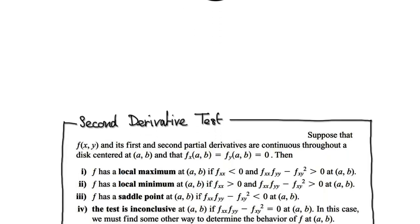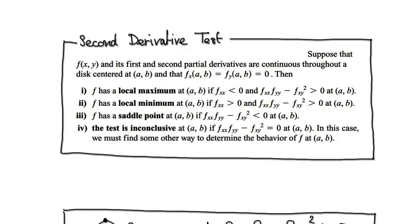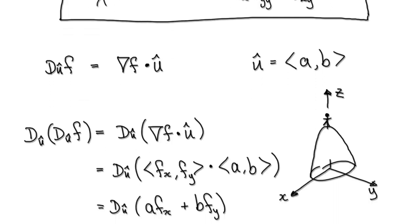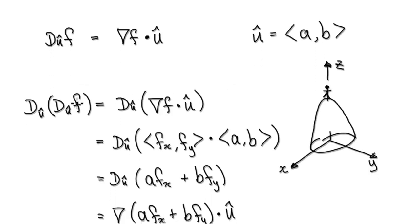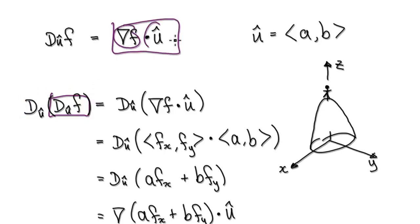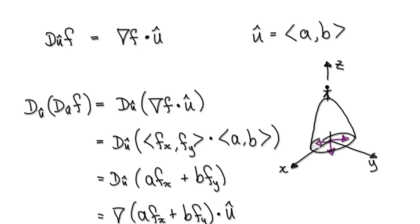Following on from our previous video, to understand the second derivative test, we will need to look at the directional derivative of a directional derivative. So we need to compute this block here — the directional derivative of a directional derivative. Remember from some of the earlier videos, the directional derivative is given by this — you need to take the dot product of two vectors, and you can head in any direction you want by specifying the unit vector.